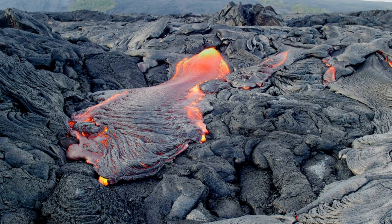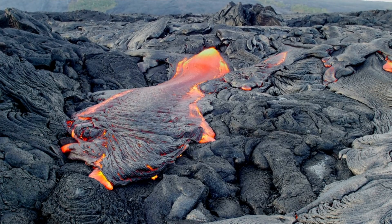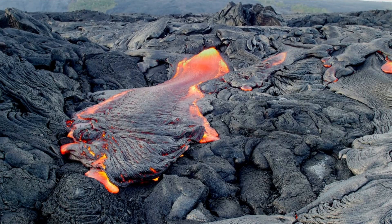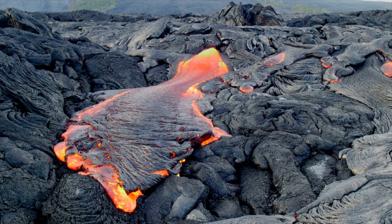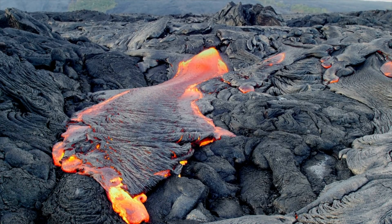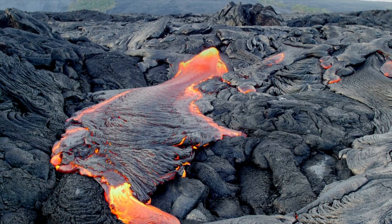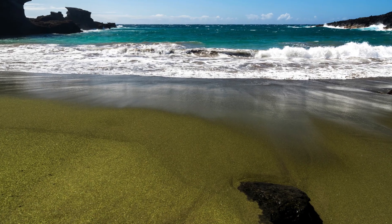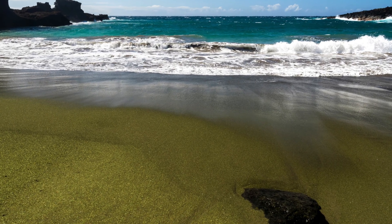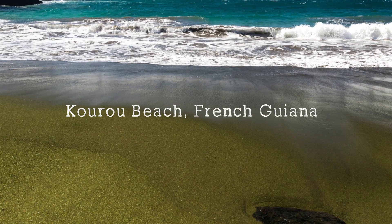Next, we have the green sand beaches. We saw earlier that the red sand beaches get their color from volcanic rocks formed from the cooling of lava. When the lava is rich in a mineral called olivine, upon cooling, the olivine crystals are formed. As they separate from the lava and accumulate on the beach, these particles are responsible for the rare green-colored sand beaches. Examples include Papakolea Beach on the Big Island in Hawaii and the Kourou Beach in French Guiana.